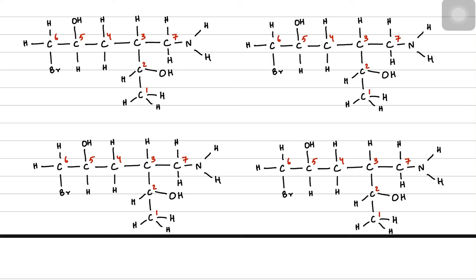Now focus on carbon 1. Carbon 1 has three hydrogens at the bottom — one, two, and three. So it can't be chiral at all, because it's making three bonds with the same kind of atom.